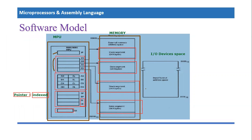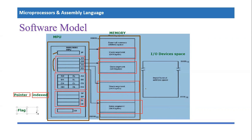Then there is one last register to be included, which is SR — the status register, normally known as the flag register. You may have seen this register in your computer organization or microcontroller courses. The flag register is an important register where different conditions are stored. For example, if the last operation resulted in zero, there is a special flag called the zero flag, which is stored as a bit that will be set. We will cover the flag register in detail in coming tutorials.